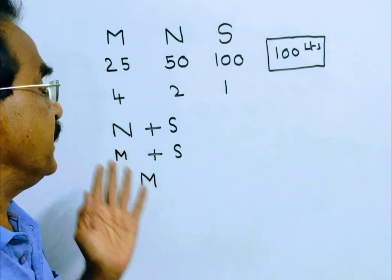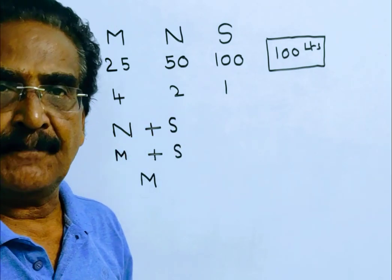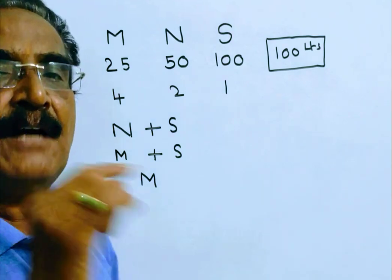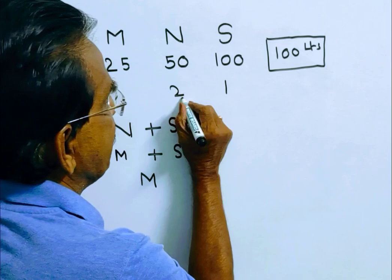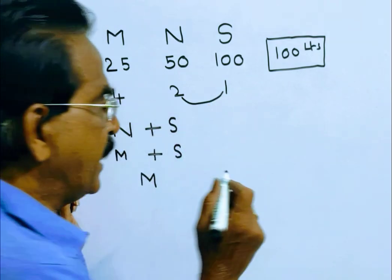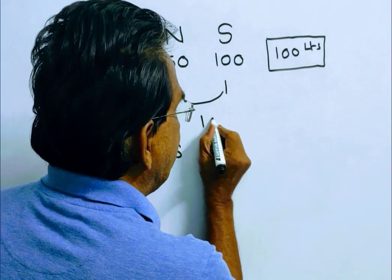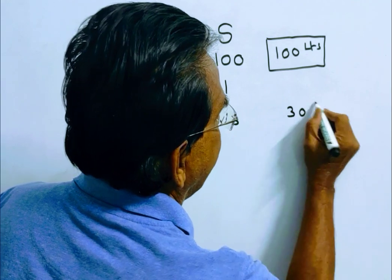Initially pipes N and S are kept open for 10 minutes. So in this 10 minutes, how much water is filled? Pipes N and S can fill 2 plus 1, 3 liters per minute. They are kept open for 10 minutes, so 10 into 3, 30 liters water is filled.